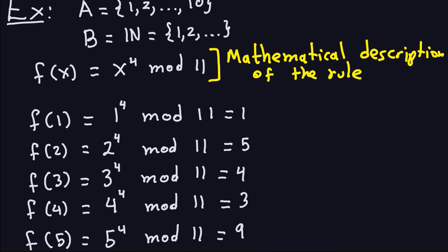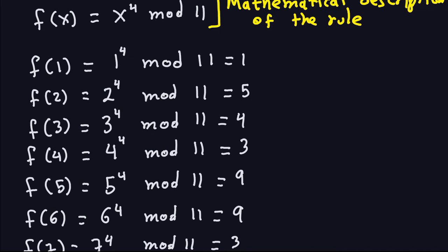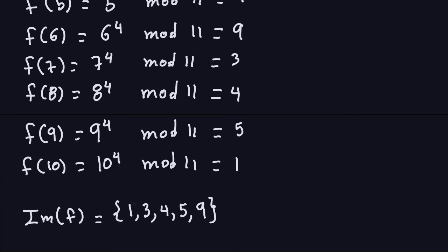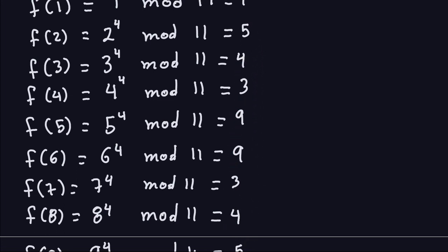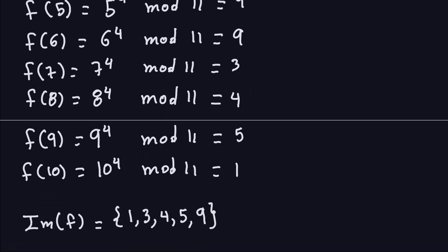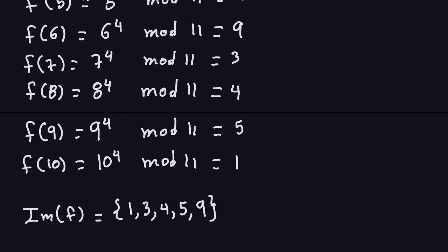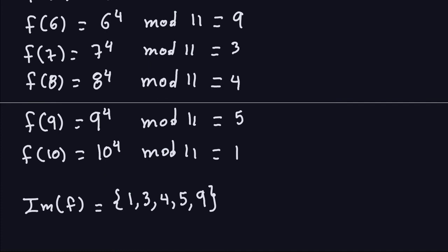For example, f(4) = 4⁴ mod 11 = 3, and f(5) = 5⁴ mod 11 = 9. The same computation applies to all inputs from 1 to 10. The image of this function is the collection of all distinct outputs. Since some outputs repeat — for instance, 9 appears more than once — you don't list duplicates. It's a set, so repetitions are not included.